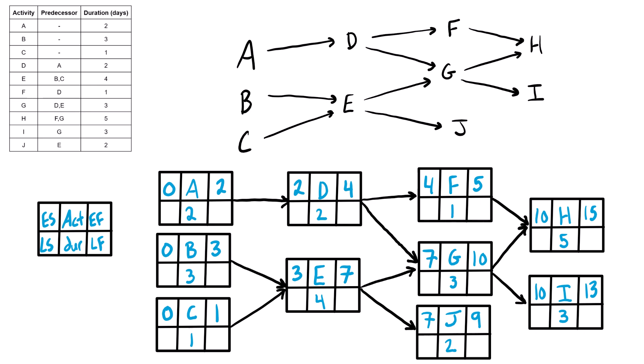Now we look at each of the three final activities — H, I, and J — and their early finishes: fifteen, thirteen, and nine. When we have more than one final activity, we take the largest early finish and bring that into the late finish of all of them. So fifteen goes into the late finish of H, fifteen into the late finish of I, and fifteen into the late finish of J.